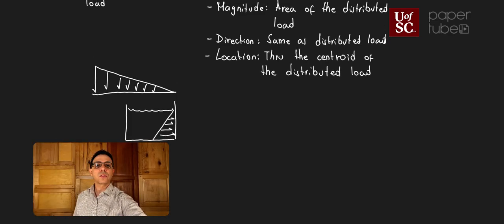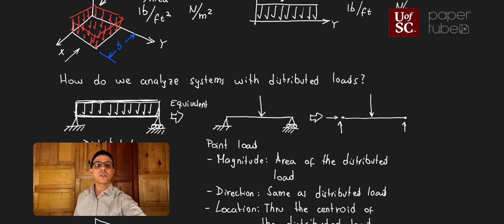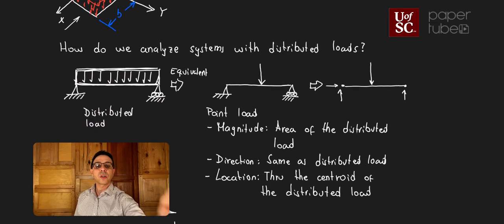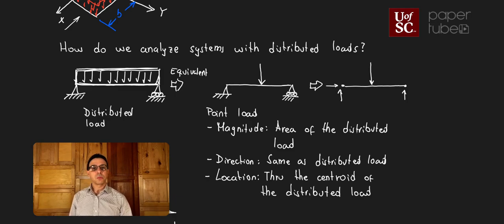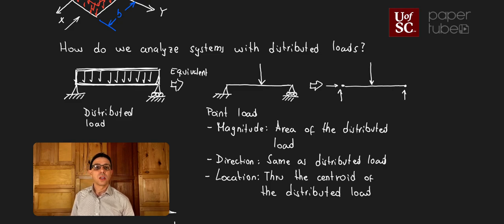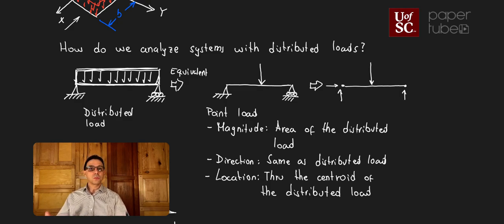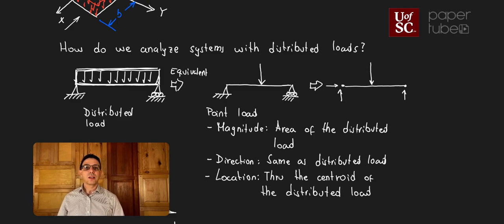In summary, what we're trying to find is an equivalent point load that has the same external effect as the distributed load — so we can do the analysis just like what we learned in the past. To do that, we need the magnitude, which equals the area of the distributed load; the direction, which is exactly the same as the distributed load; and the location, meaning the line of action goes through the centroid of that distributed load.